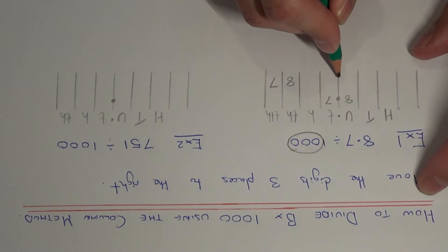The decimal point doesn't move. Any gaps between the decimal point and the numbers, we need to fill in these gaps with zeros.